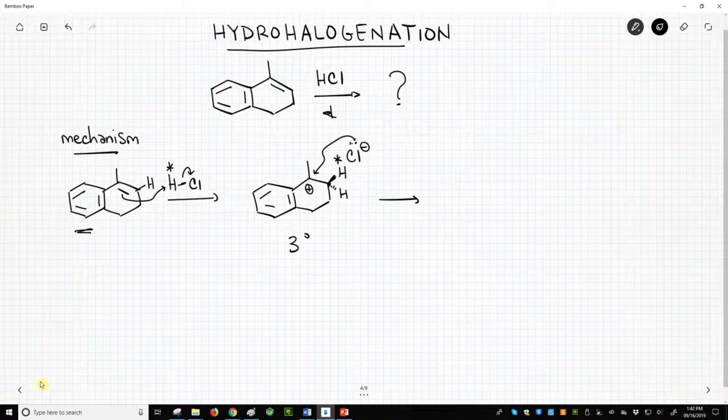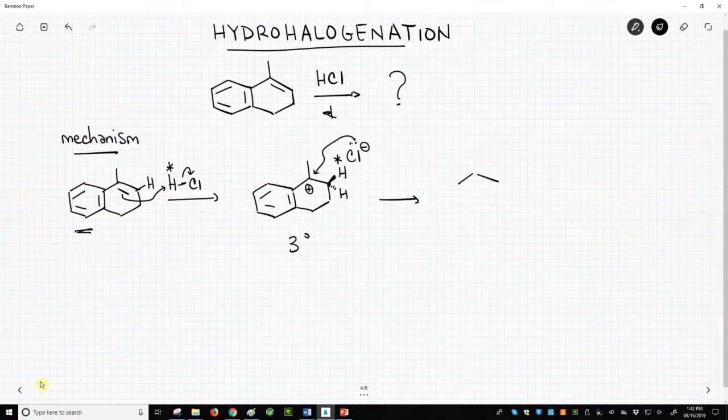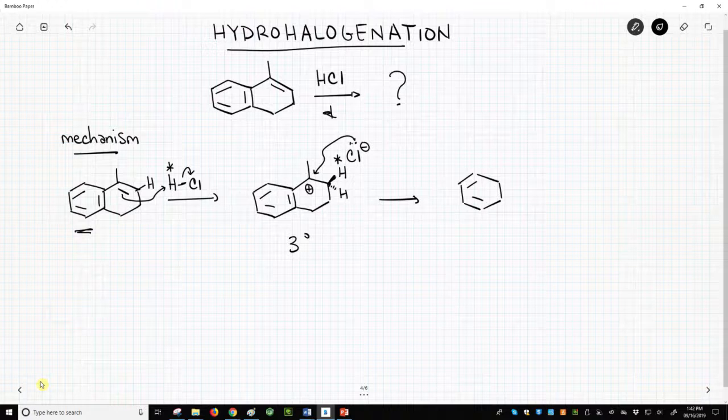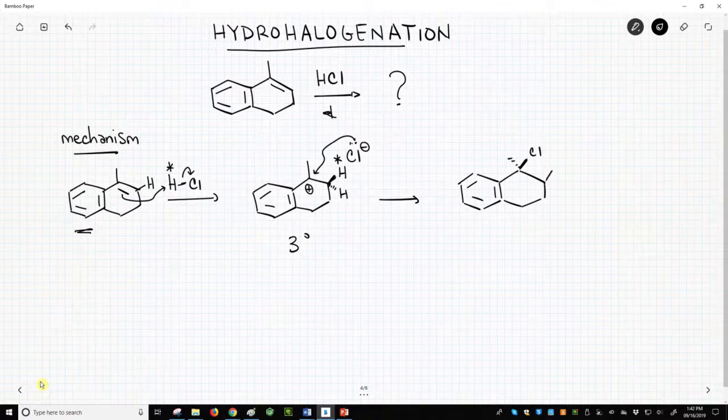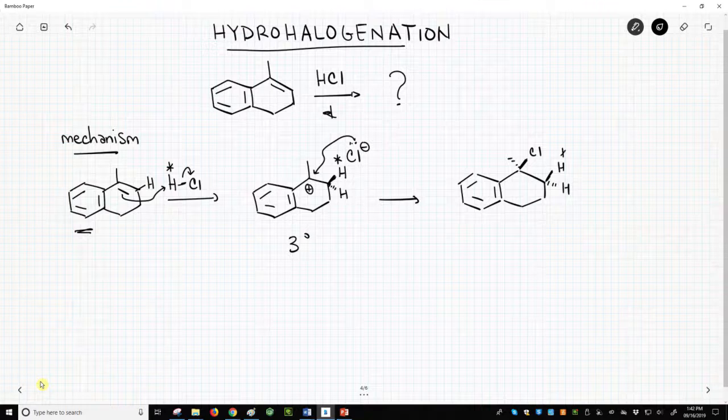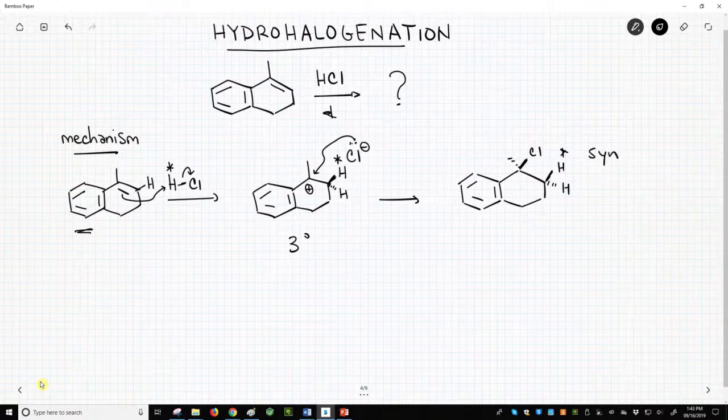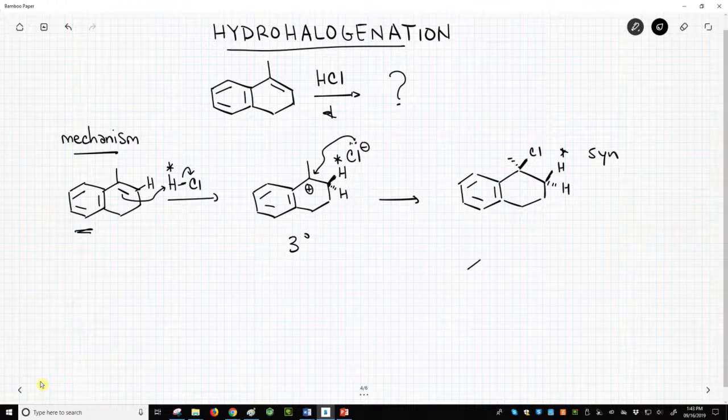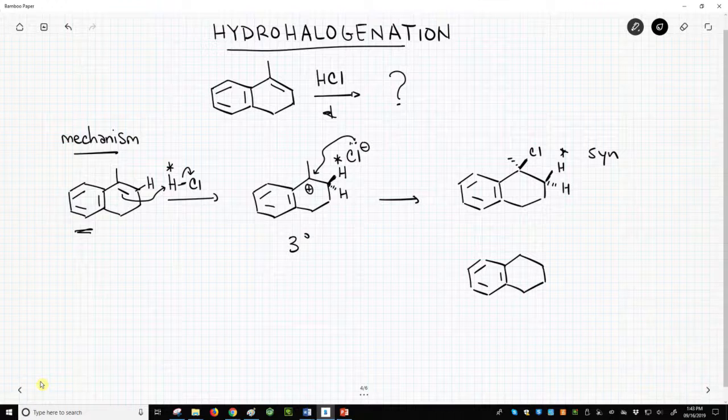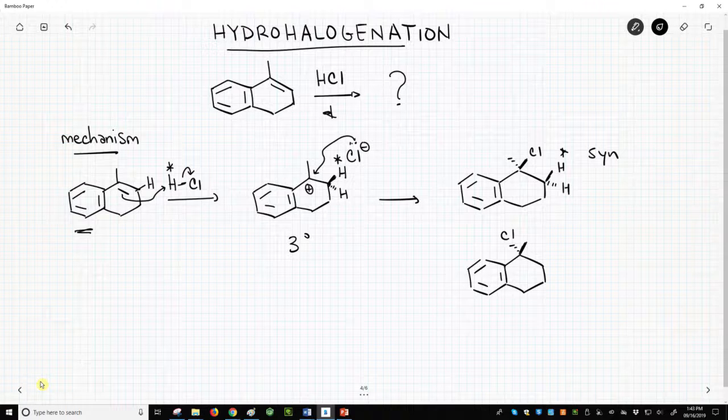Note that the chloride can attack from either the top or bottom of the flat carbocation. Both attacks will happen. If we get attack from the top, the new hydrogen and chlorine will be syn to each other. If we get attack from the bottom, the new hydrogen and chlorine will be anti.